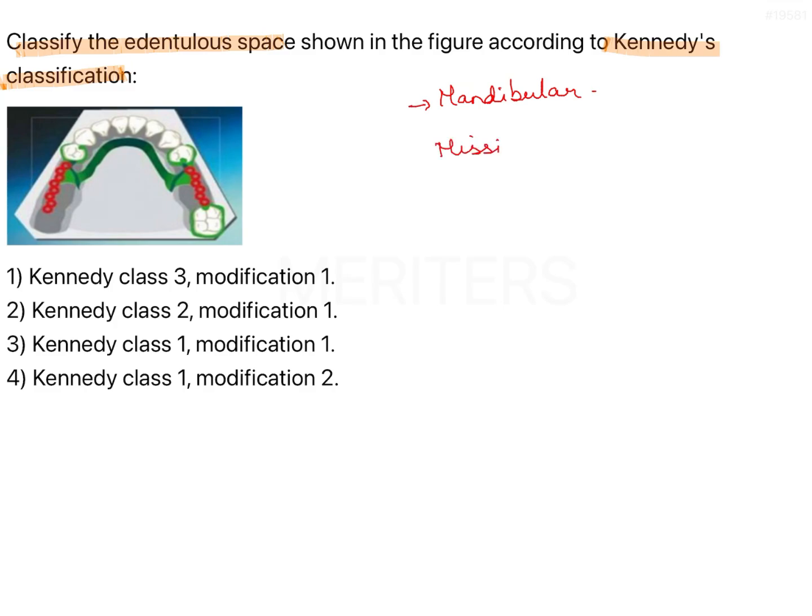Number of teeth missing, let's just note it down. So this is our third quadrant and this is our fourth quadrant. In the third quadrant, we have 3-4 present, so 3-5, 3-6, 3-7 are missing.